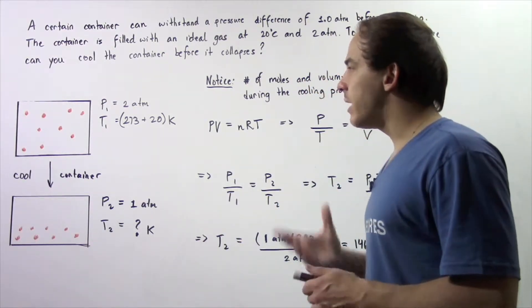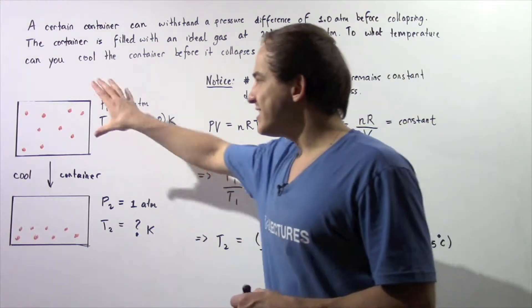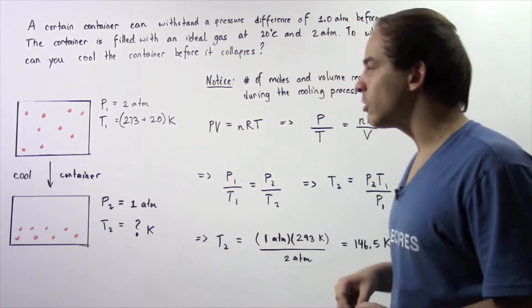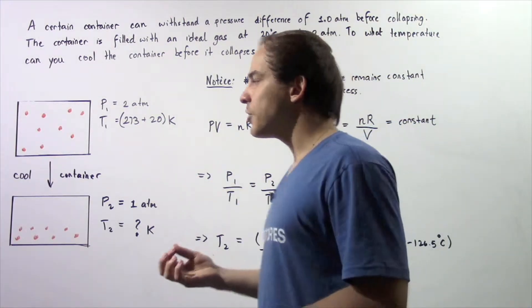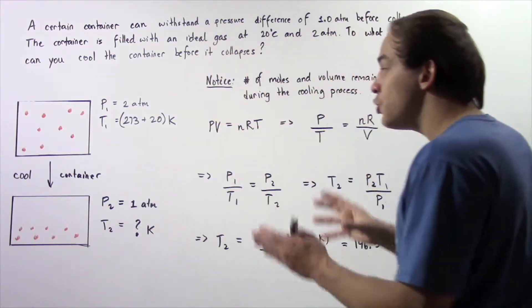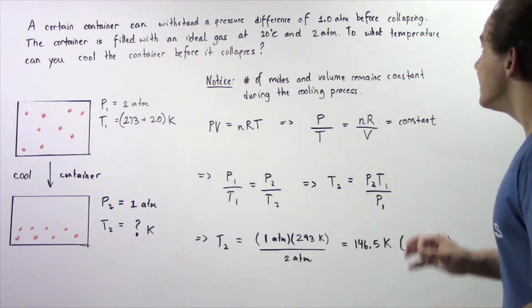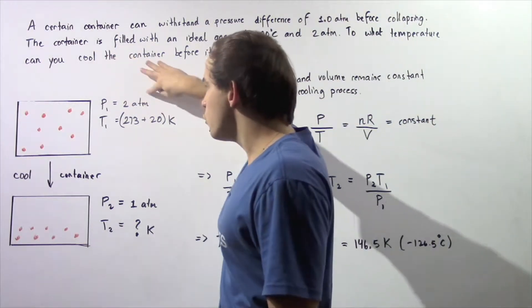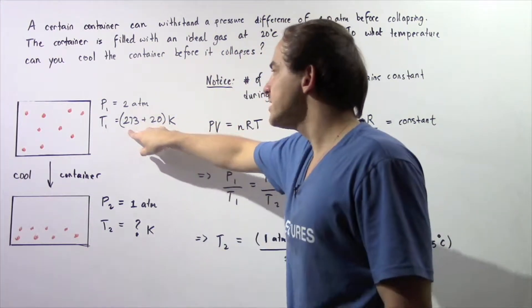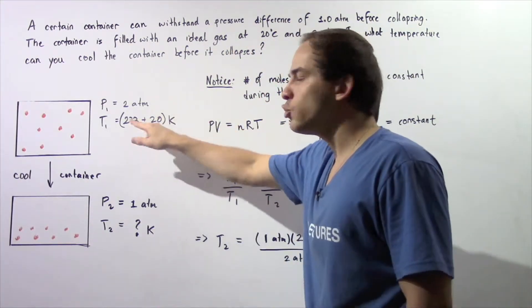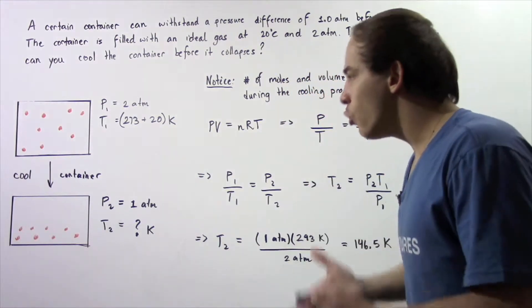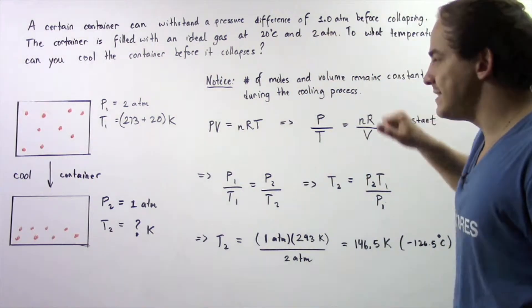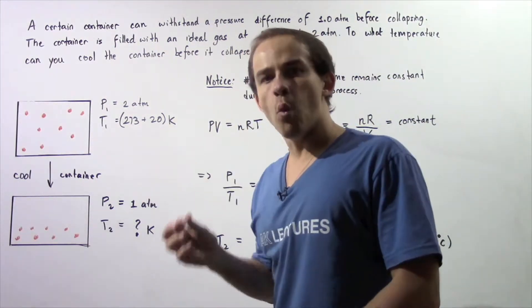Let's begin by looking at our two diagrams: system number one before we cool it and system number two after we cool our container. We want to cool the container in such a way that our new pressure does not exceed by 1 atm. We begin with a pressure of 2 atm and a temperature of 273 plus 20 or 293 kelvins. We cool our container to a pressure of 2 atm minus 1 atm, so the new pressure P2 is 1 atm and the temperature T2 is what we want to calculate.